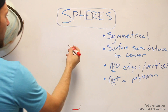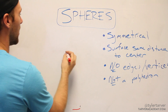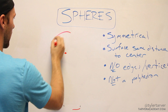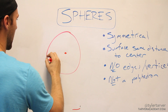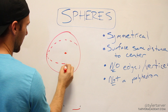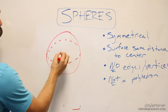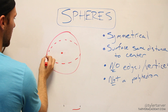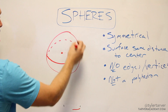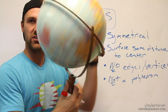A sphere is essentially a three-dimensional circle. You have your center, you've got your outside. Picture this in your head — it goes all the way around.